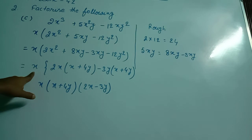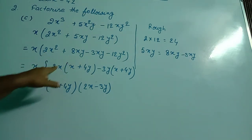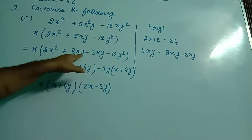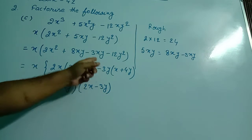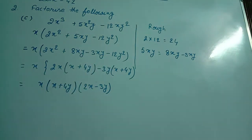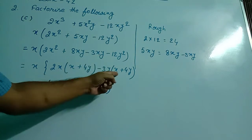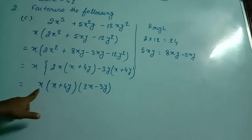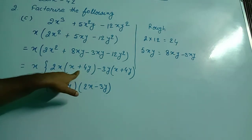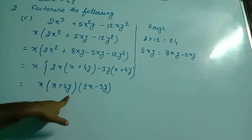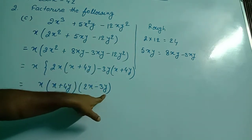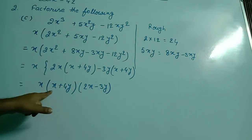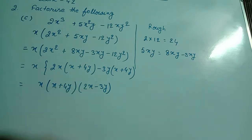From the first two terms, we can take 2x as common, so x is left plus 4y. From the last two terms, we can take minus 3y as common, so x is left plus 4y. Now x plus 4y becomes common. I wrote x plus 4y, and what is left — 2x minus 3y — I wrote inside the bracket. So the factors of this given equation became x(x + 4y)(2x - 3y).